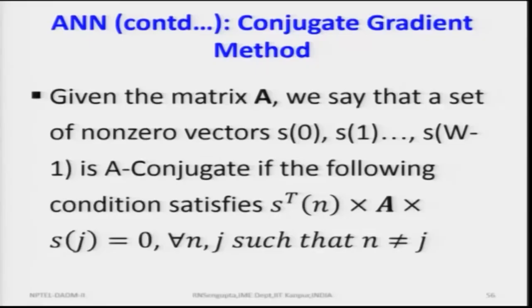In the matrix framework, the objective function is: half of a-transpose times x-transpose times a times x, plus b-transpose times x, plus c. The sign of b, c, and a values is immaterial here — the objective function is what matters. A set of nonzero vectors is said to be conjugate if the condition s-i-transpose times A times s-j equals zero for i not equal to j is satisfied, where n is the size of the parameters.